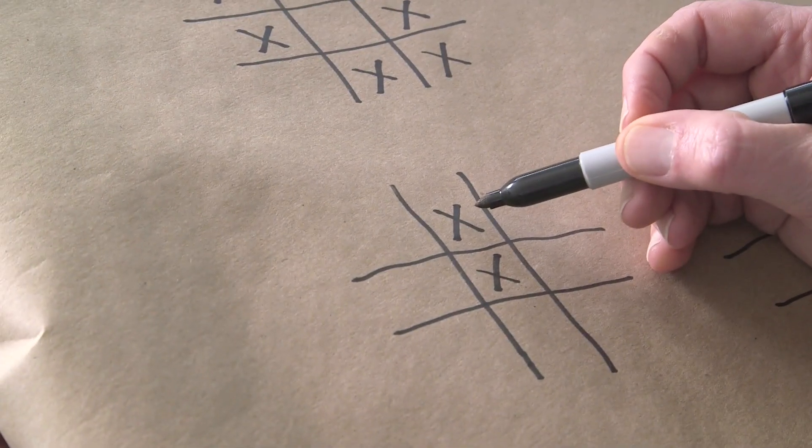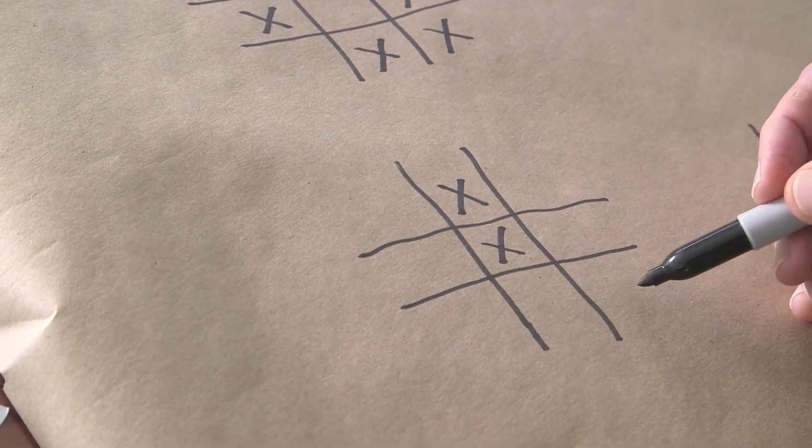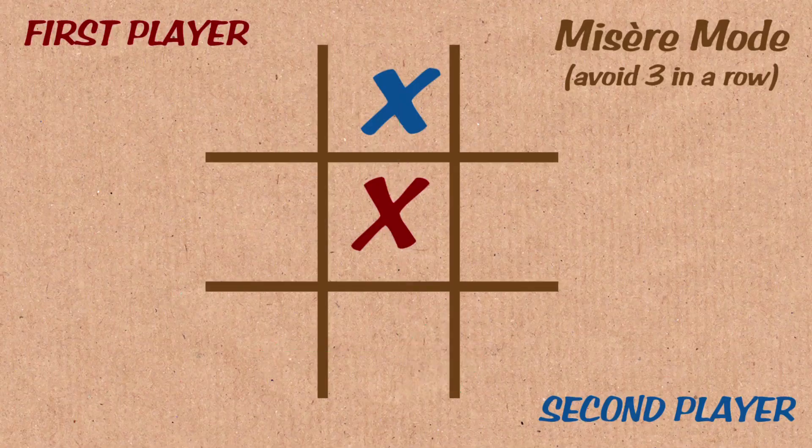So here, my opponent has just moved here. So I have two choices. This would be two down and one over this way, or I also have two down and one over this way. So I could play in either one of these. Let's say I play here. I claim that is a good move.